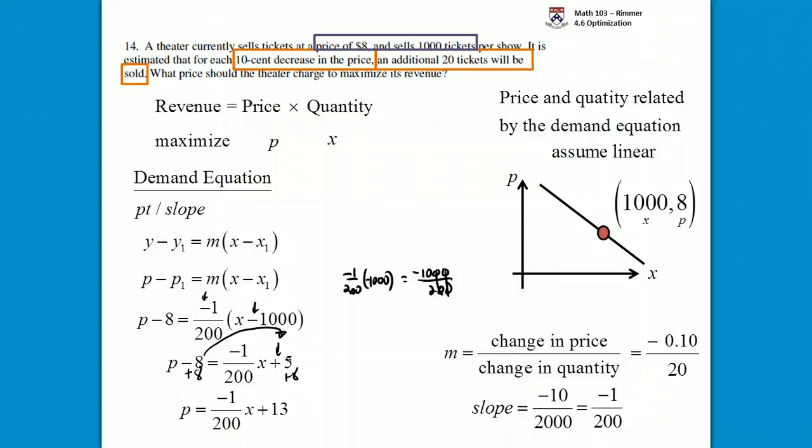We need that because currently this quantity that we want to maximize, revenue, is a function of two variables. We take our p, price, we take our x, quantity, and we multiply them together. But now we have a formula for price in terms of quantity. So we're going to go up and substitute that in so we can have a single variable equation and be able to maximize it.